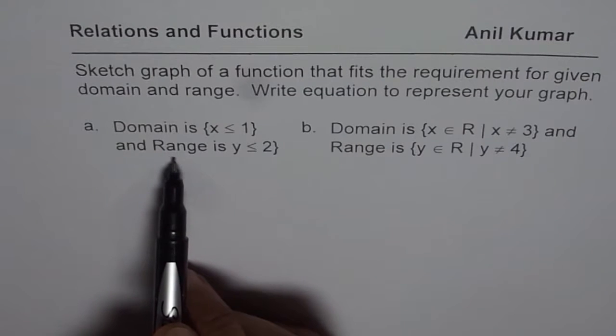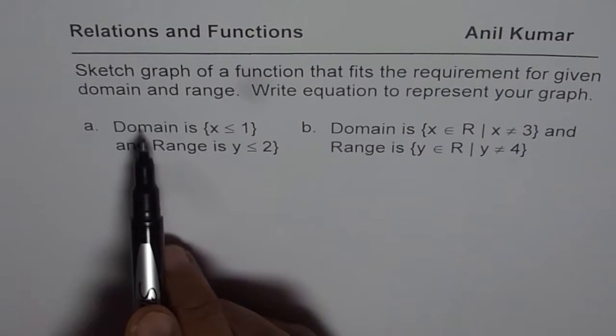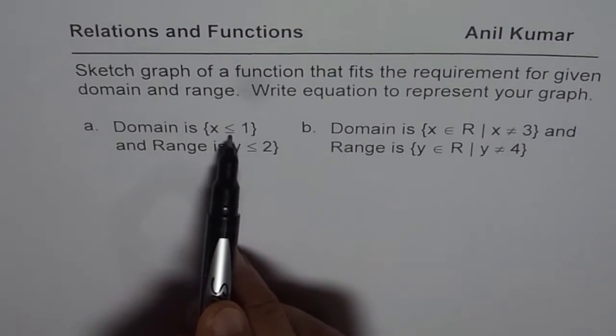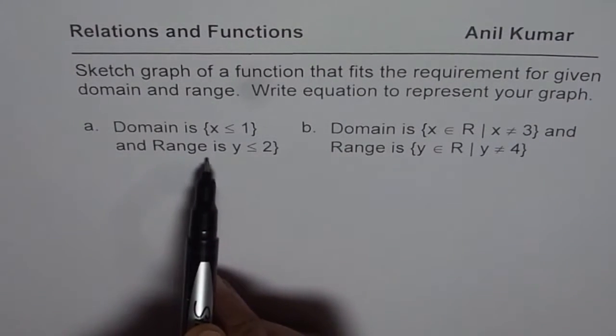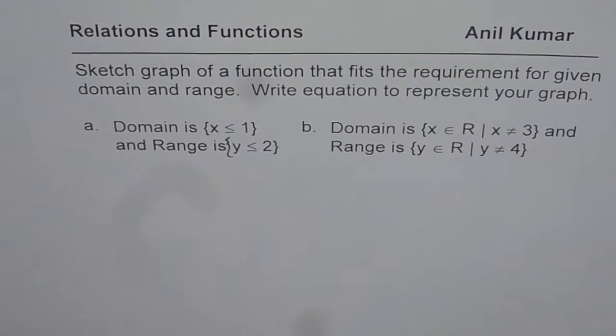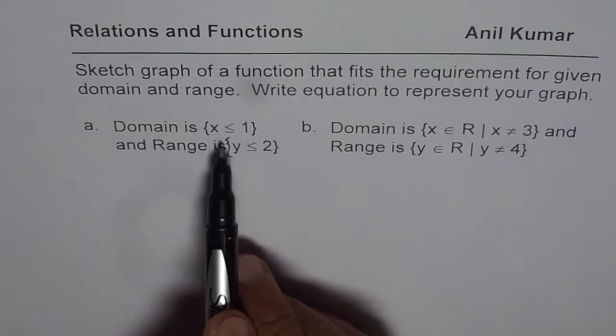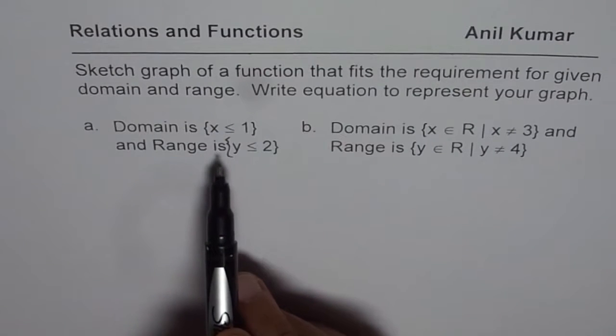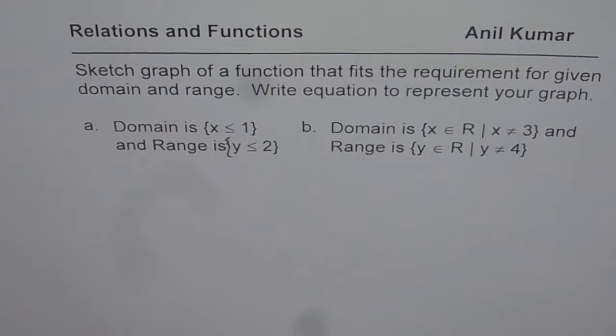Now domain range of the first function here is, domain is x less than equal to 1 and range is y which is less than equal to 2. So even if we write like this, it is assumed that x and y are all real numbers. So by default, real numbers is there.